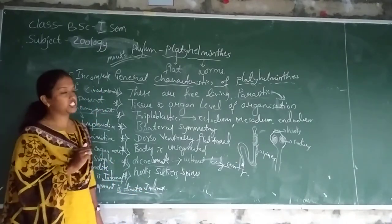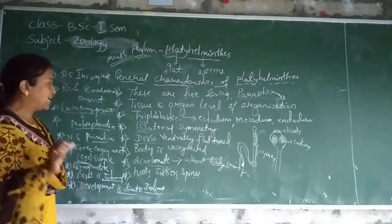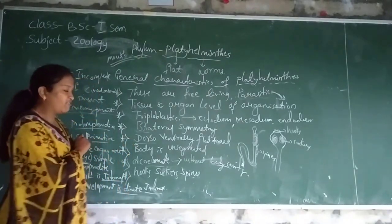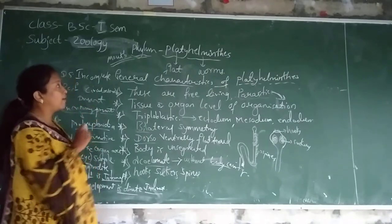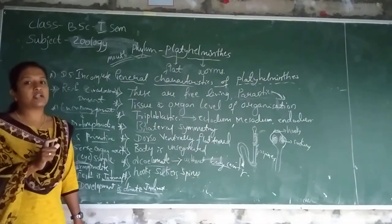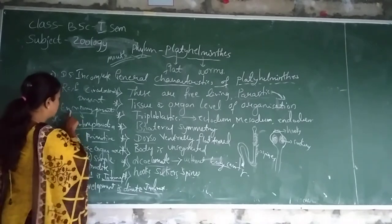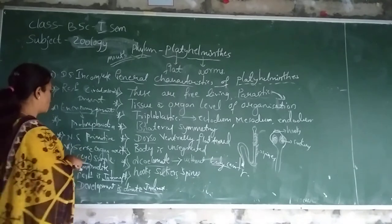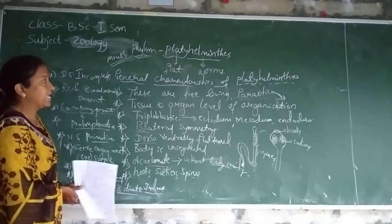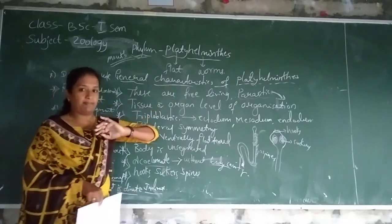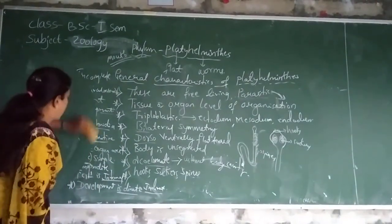So these are some of the special general characteristics of platy elemntis. The main characters are: free living and parasitic; tissue or organ level of organization; triploblastic; bilaterally symmetrical; dorso-ventrally flattened; body is unsegmented; hooks, suckers, and spines present; digestive system is incomplete; excretory, circulatory, and respiratory systems are present; nervous system is primitive; sense organs are simple; hermaphrodite; fertilization is internal; and development is direct or indirect.